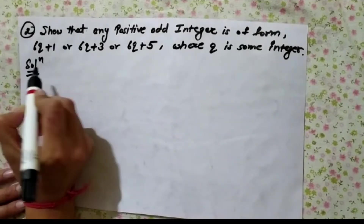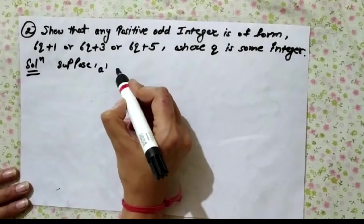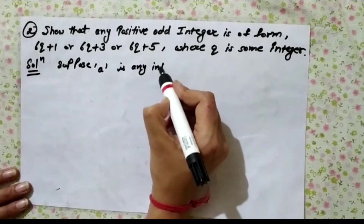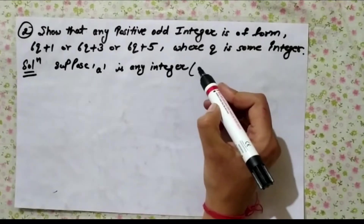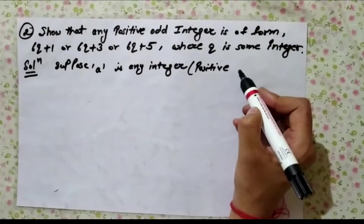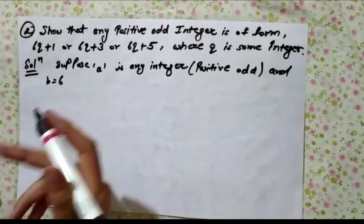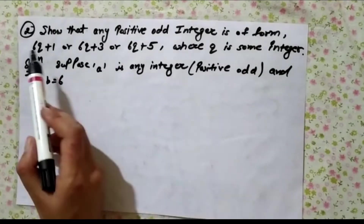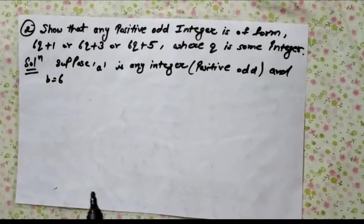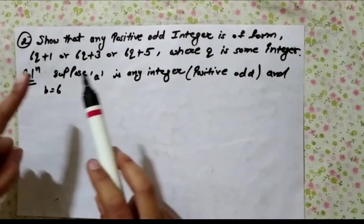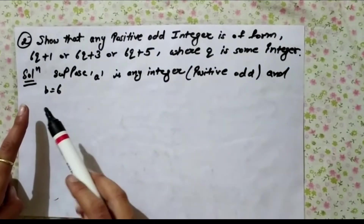Solution: suppose a is any positive odd integer, and take b equals to 6. Here is the reason why we are taking b equals to 6: because in the statement you have given 6q plus 1. If we take b equals to 6, the remainder will vary from 0 to 5, and r depends on b.